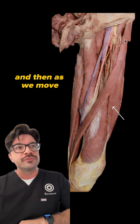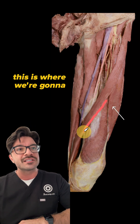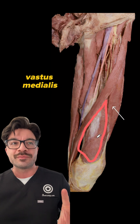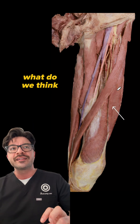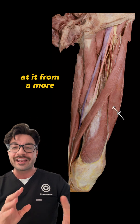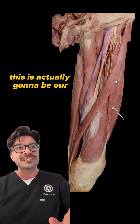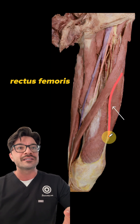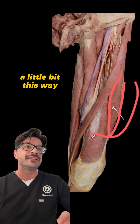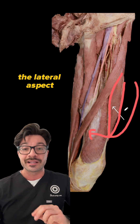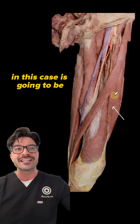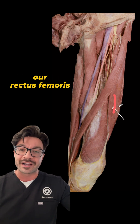And then as we move a little bit more inferiorly, this is where we're going to have our vastus medialis. So if this is the vastus medialis, what do we think this would be? It's not the vastus lateralis. Because we're looking at it from a more medial perspective, this is actually going to be our rectus femoris. If we were to turn the leg a little bit this way, then we might see some of the lateral aspect where we have the vastus lateralis. But the correct answer in this case is going to be our rectus femoris.